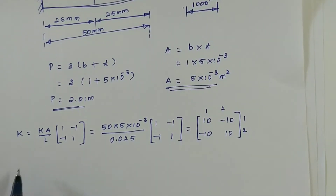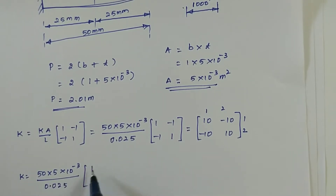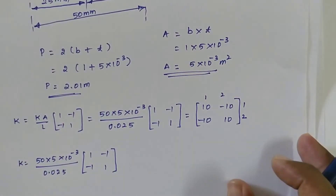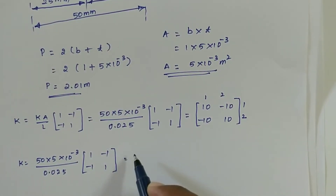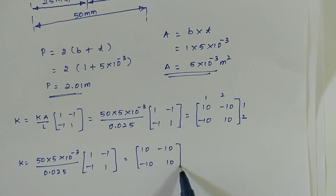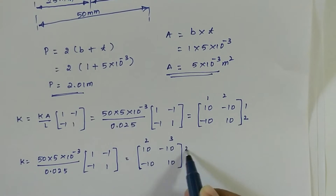Similarly, for element 2: 50 into 5 into 10 power minus 3 divided by length 0.025, times [+1, −1; −1, +1]. After simplification we get the same values: [+10, −10; −10, +10]. Since element 2 is made up of nodes 2 and 3, we mark this as 2, 3.